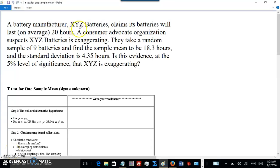A battery manufacturer, XYZ Batteries, claims its batteries will last on average 20 hours. A consumer advocate organization suspects XYZ Batteries is exaggerating. They take a random sample of nine batteries. Let's write that down: n equals nine. They find the sample mean to be 18.3 hours. Let's write that down: X bar equals 18.3 hours, and standard deviation of 4.35 hours. So that's S, the sample standard deviation.